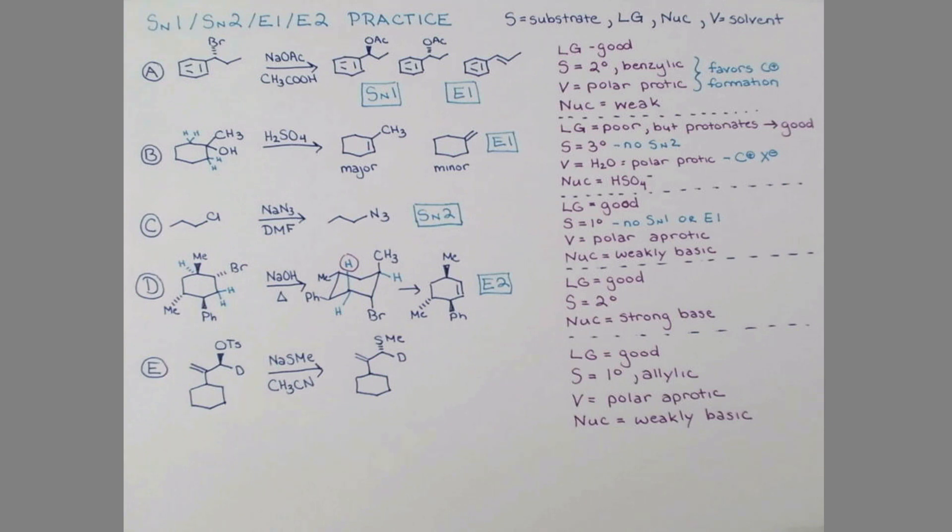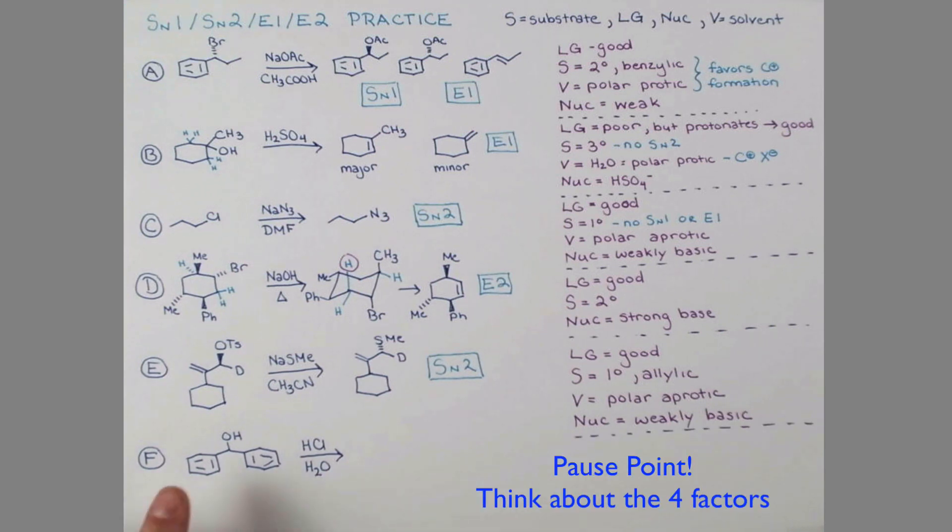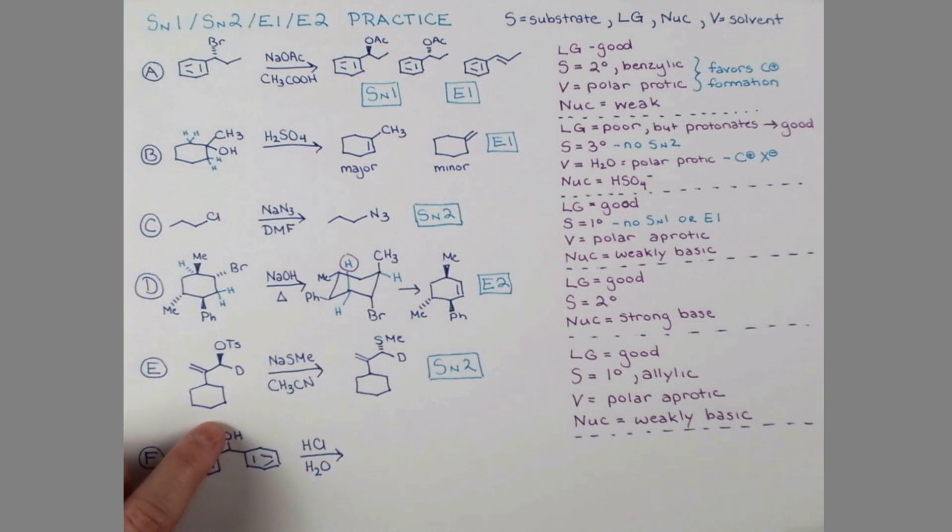Let's go for it. Let's treat this alcohol with hydrochloric acid in water. At first glance this looks like a poor leaving group because it would have to leave as hydroxide. However, we have acid which protonates the oxygen here and makes this into a good leaving group - water. Our substrate is secondary, so this is our hardest substrate to figure out because it has a lot of mechanisms available.